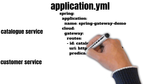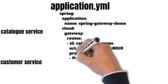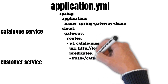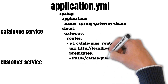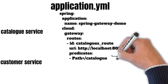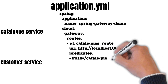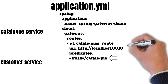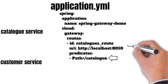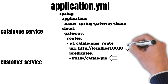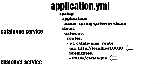We will then give it a predicate path — suppose we give it '/catalogs'. Now whenever a request for '/catalogs' comes to the API gateway, it will be redirected to localhost port 8081, which is the catalog service running on its own container.